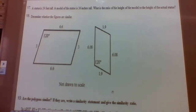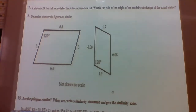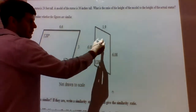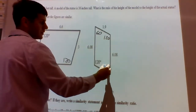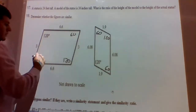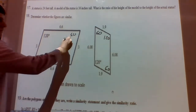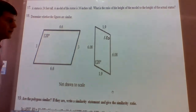Problem 18: we have two quadrilaterals and we want to determine if they are similar. In order for these figures to be similar, we need the ratios of the corresponding sides to be equal — the sides are proportional. All four pairs of sides need to be proportional and all pairs of angles need to be congruent. It looks safe to assume we have parallelograms here, so opposite sides of parallelograms are congruent.